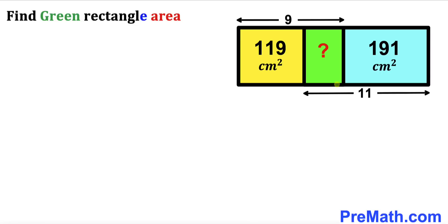Welcome to pre-math. In this video we have got a bigger rectangle that consists of three smaller rectangles: the yellow one, the green one, and the blue one, as you can see in this diagram.